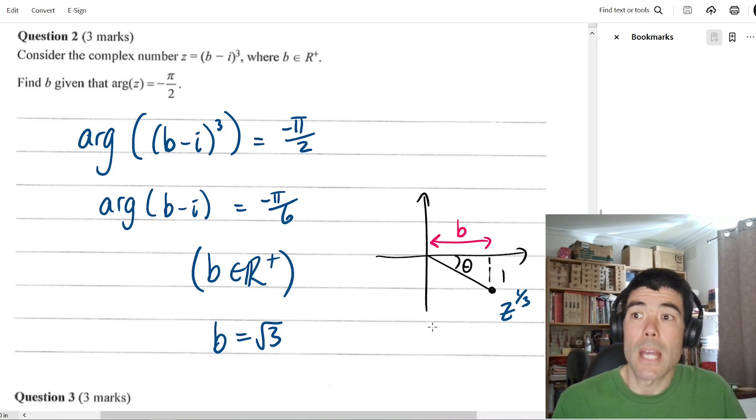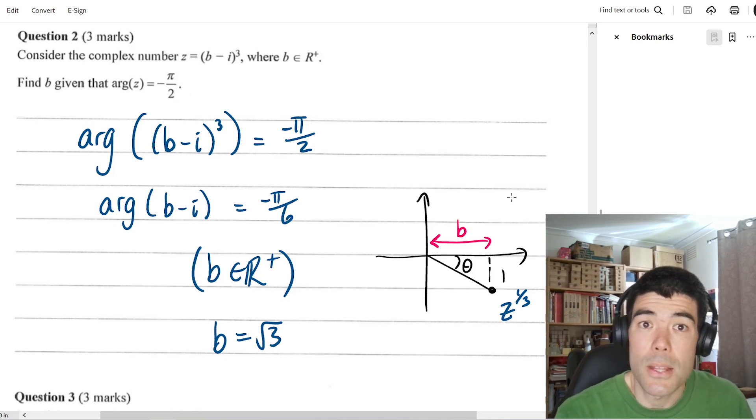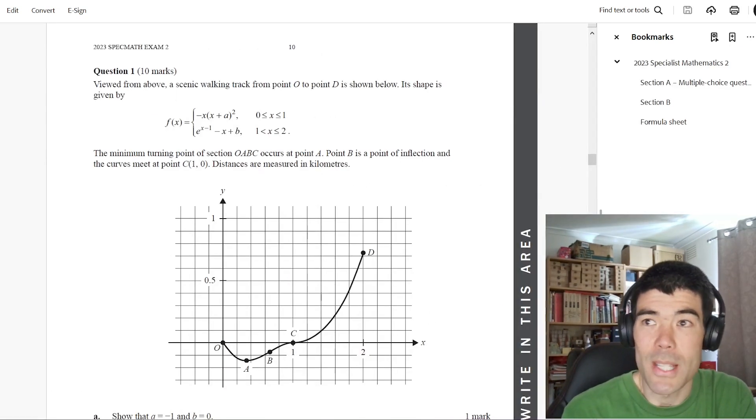And we didn't have to consider the other two roots. One here is going to be in quadrant 3, where b is negative root 3. And the other one, I think, is going to be up here on the imaginary axis. So takeaways from that question, I think, use polar form, given that we are given some information about the angle. Also, a nice clear diagram makes it easy to think about the problem and see what's going on. Alright, let's move on to exam 2.